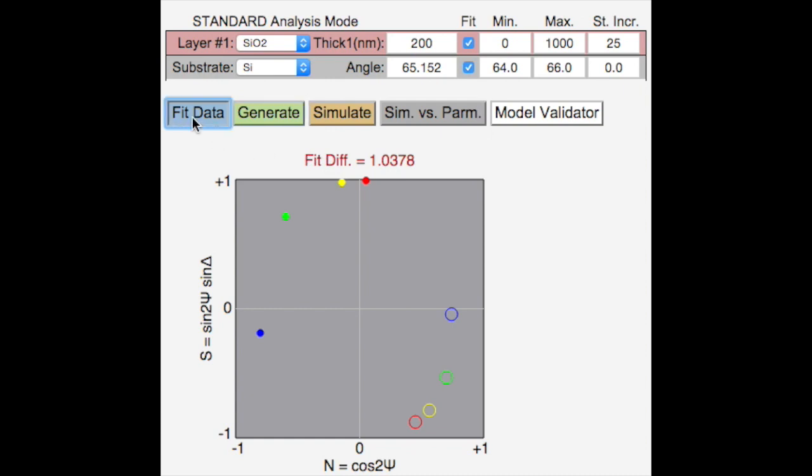When the Fit Data button is clicked, the software automatically searches for the parameter values which minimize the difference between the measured and model generated ellipsometric data sets. For a good fit, four bullseyes appear in the plot, the fit diff value is low,